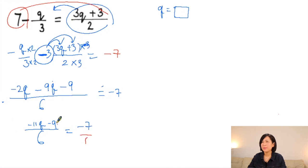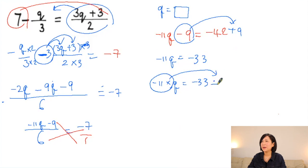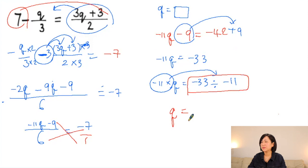Use the cross method: −11q − 9 = 6 × (−7) = −42. Rearrange: −11q = −42 + 9 = −33. Undo times −11 by dividing by −11: q = −33 ÷ −11. Both numbers are negative, so the negatives cancel and your answer is q = 3.